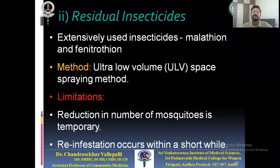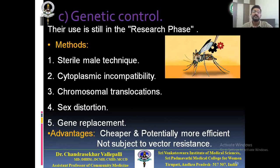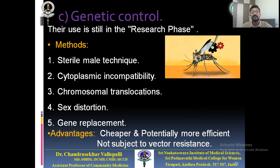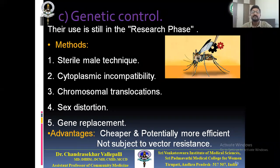Genetic control methods are still in the research phase. Methods include sterile male technique, cytoplasmic incompatibility, chromosomal translocations, sex distortion, and gene replacement. Advantages over chemical or biological methods: genetic control is cheaper, potentially more efficient, and not subject to vector resistance as seen with insecticides.